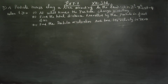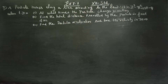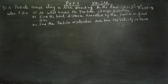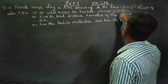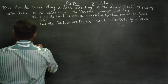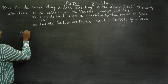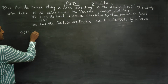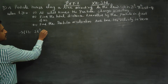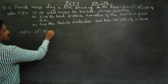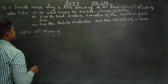Hello Class 12 standard students. A particle moves along a line according to the law. Exercise number 7.1, sum number 3. A formula is given for you. This is actually the distance formula: S of t is equal to 2t cubed minus 9t squared plus 24t minus 4.